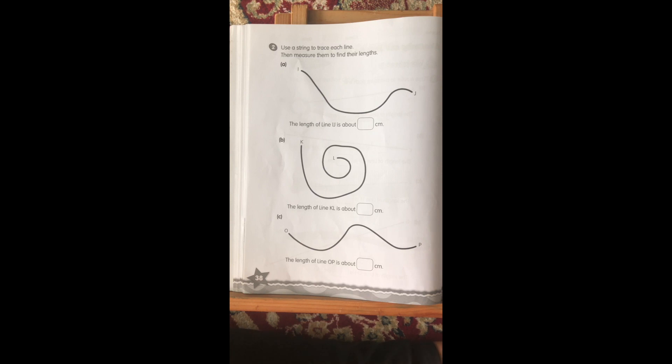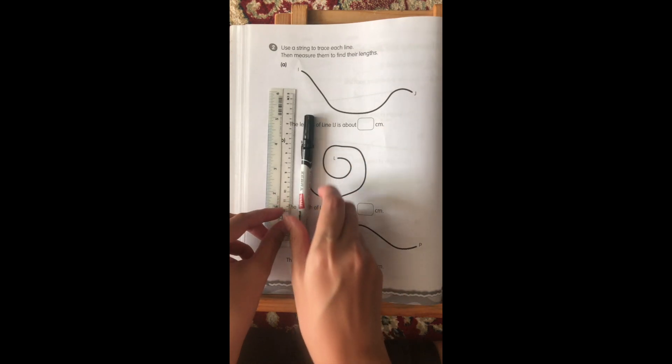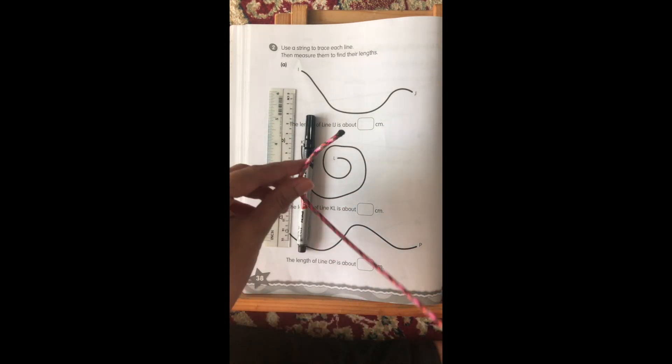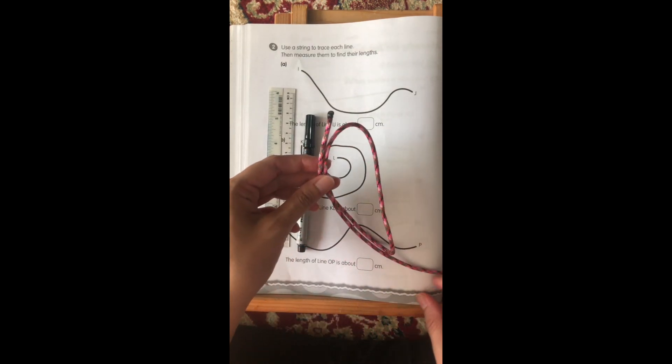Please check that you have these items. You will need a ruler, a marker or a pen, and a string. So this is my string here. We are going to use the string to trace the line.